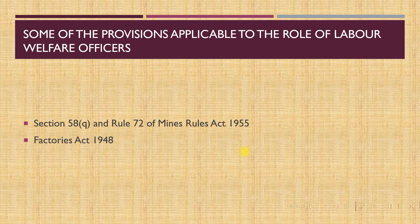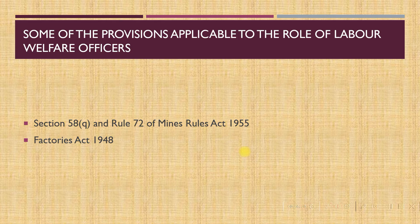According to the Factories Act 1948, Section 49, a labour welfare officer needs to be appointed in a factory or establishment that employs 500 or more workers. According to the Plantation Labour Act 1951, Sections 18.1 and 18.2, a plantation employing 300 or more workers should appoint a labour welfare officer. According to the Mines Rules 1955, Section 58Q and Rule 72, a mine employing 2,500 or more workers should appoint an additional labour welfare officer, per modifications made in 2008.